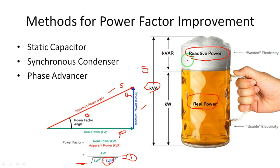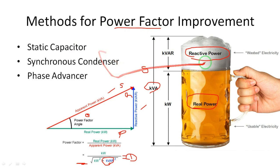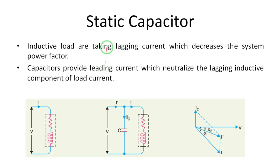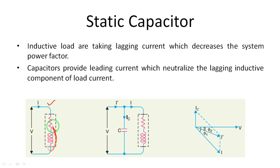We should maintain the power factor at unity or at least approximately equal to unity. This means we need to eliminate, or at least reduce, the reactive power to approximately zero. For this purpose we use three methods. The main heading is power factor improvement methods, but indirectly we are discussing methods to decrease the reactive power component. Now we go to the first method: the static capacitor method.